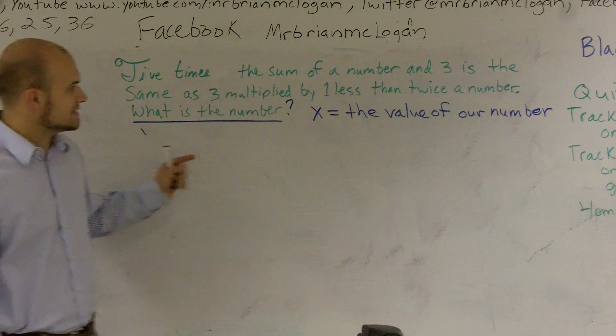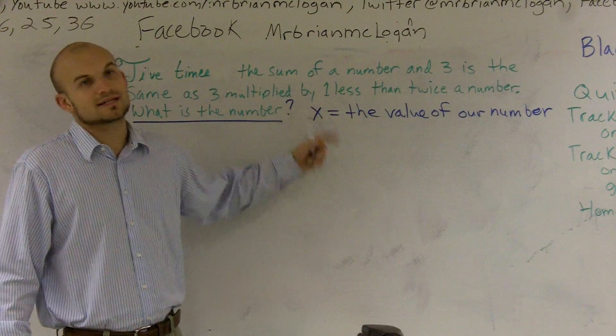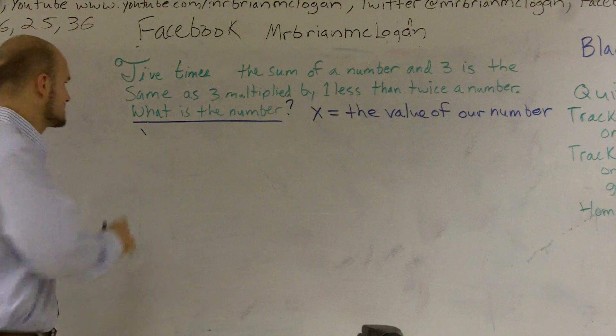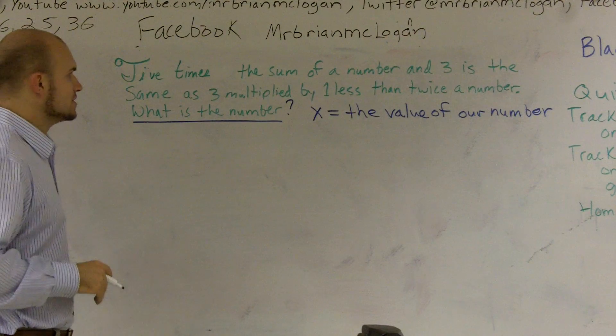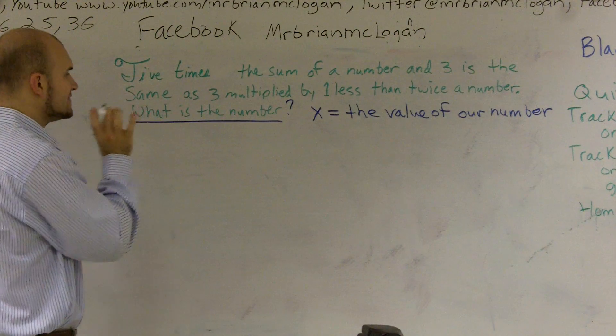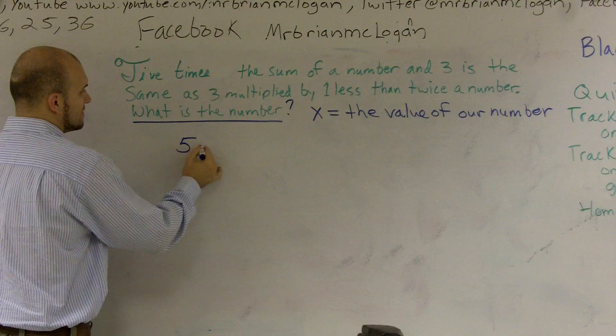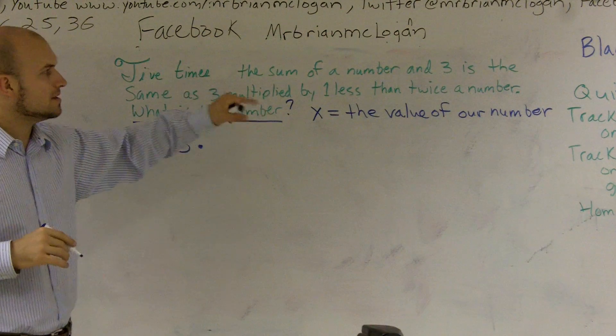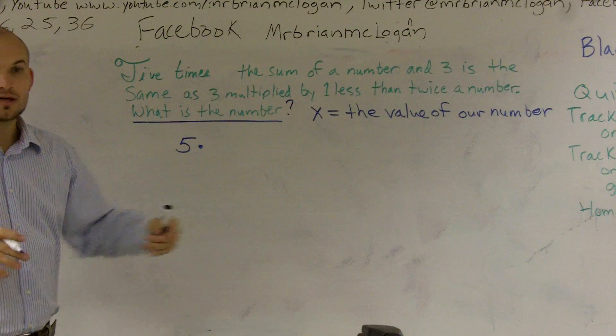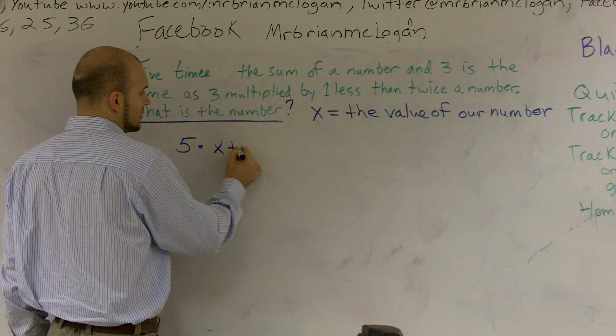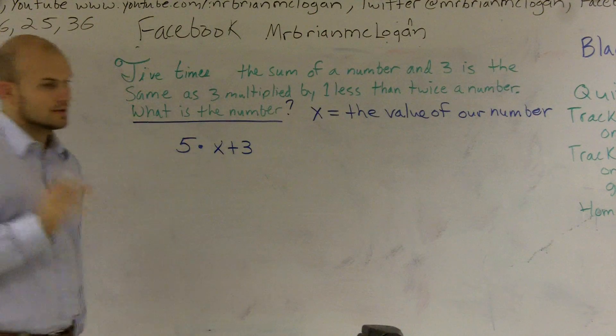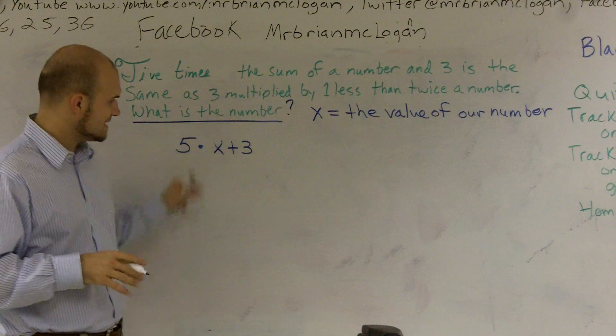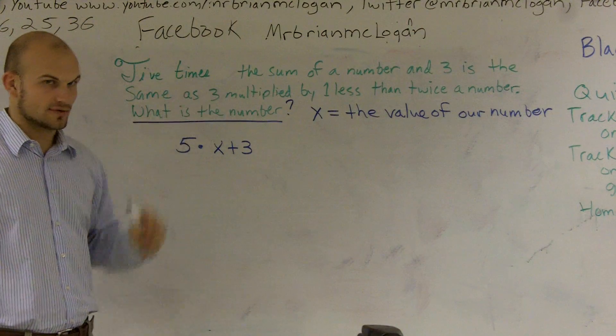And this is important because now what we did is we don't know what the number is, but we're going to say it's going to be x. And what this will help us do now is we can create an equation and then solve for x. So it says five times. So I know I'm going to be multiplying five by something. Then it says the sum of a number and three. So that means I need to add x plus three.